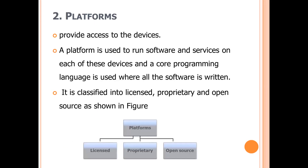The next layer is the platform. The mobile platform's primary duty is to provide access to the device to run software and services on each device. We need a platform or a core programming language in which all of the software is written. Like all software platforms, they are split into three categories: licensed, proprietary, and open source.